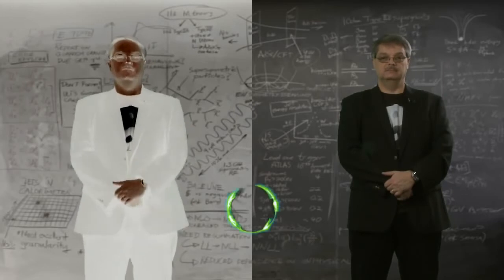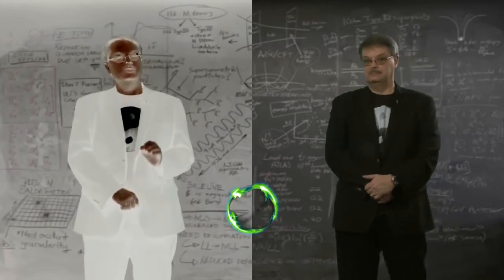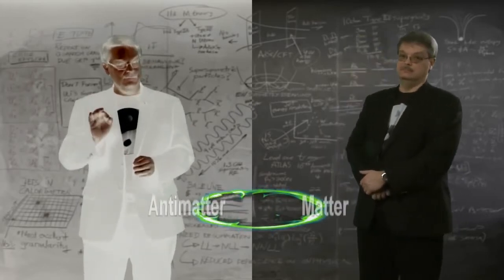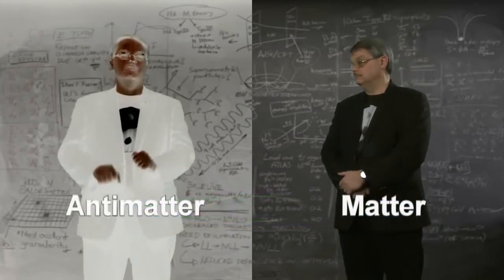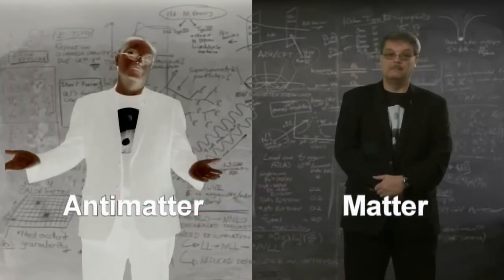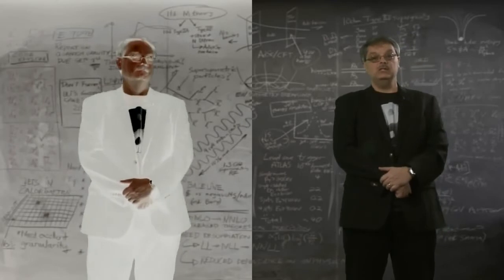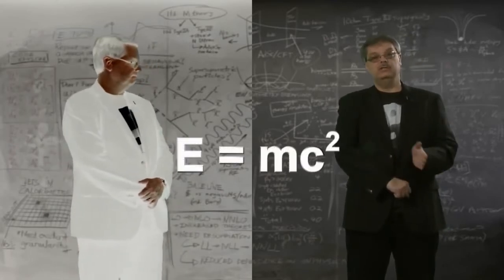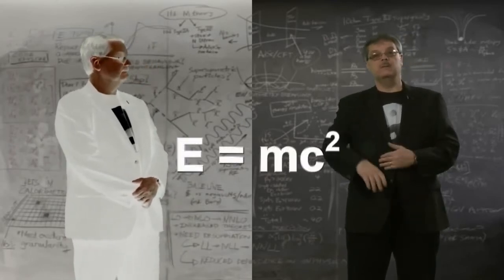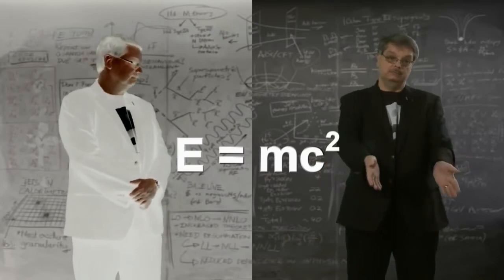However, that statement is incomplete. When we convert energy into a particle of matter, we must at the same time create an identical number of particles of antimatter. It's always the same. So what Einstein's equation means is that you can convert energy to matter and antimatter, and you can combine matter and antimatter to make energy.